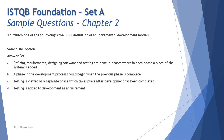Option A: defining requirements, designing software, and testing are done in phases where in each phase a piece of the system is added. The word 'increment' itself tells you that something new is added to the existing system each time — it's not created independently but merged with the rest of the application. This sounds like the right answer, but let's check the remaining options.